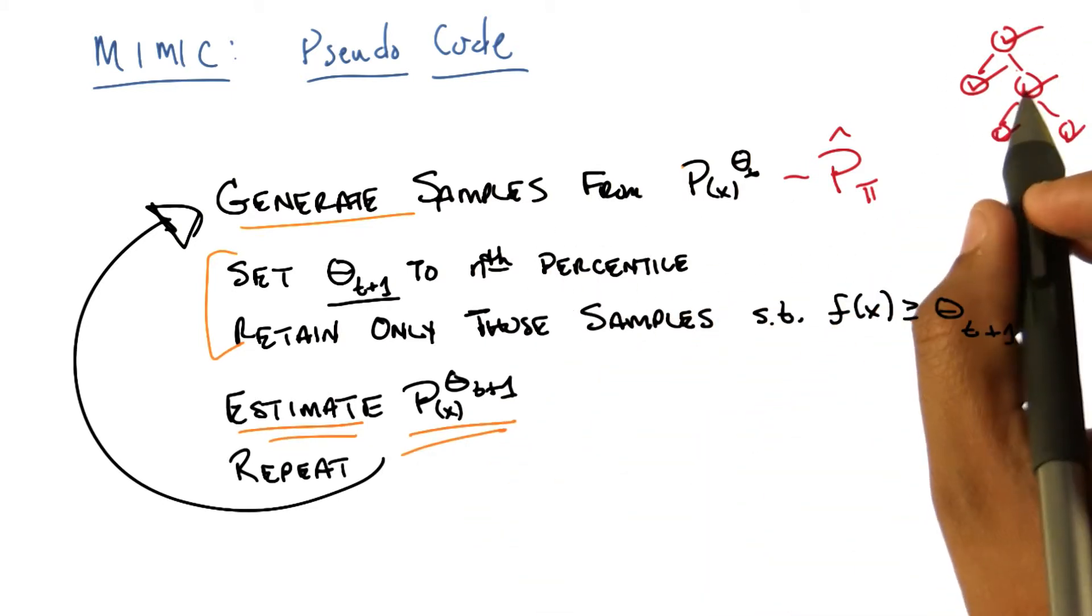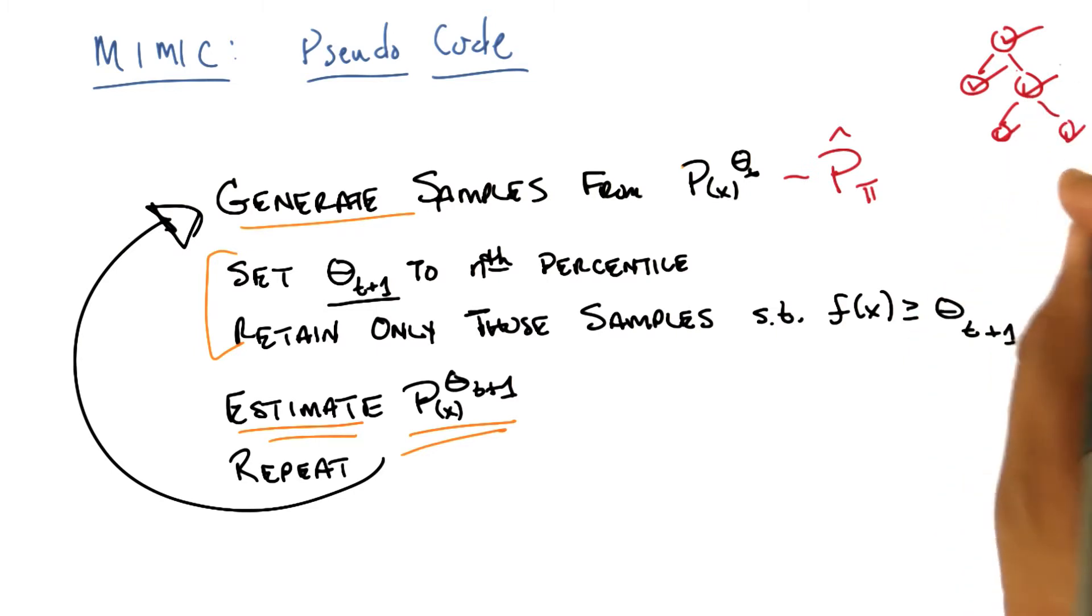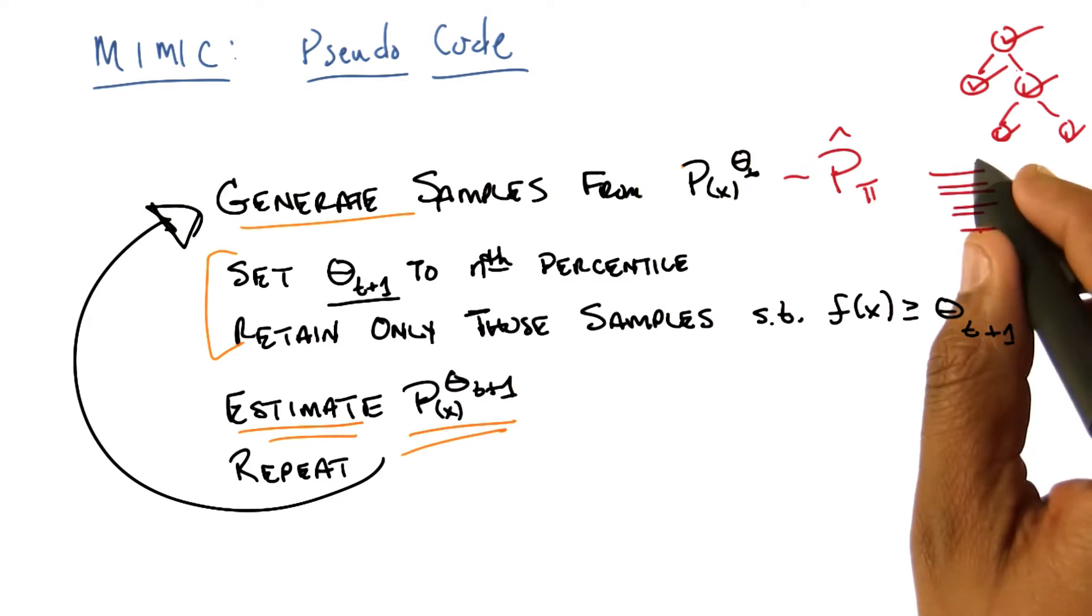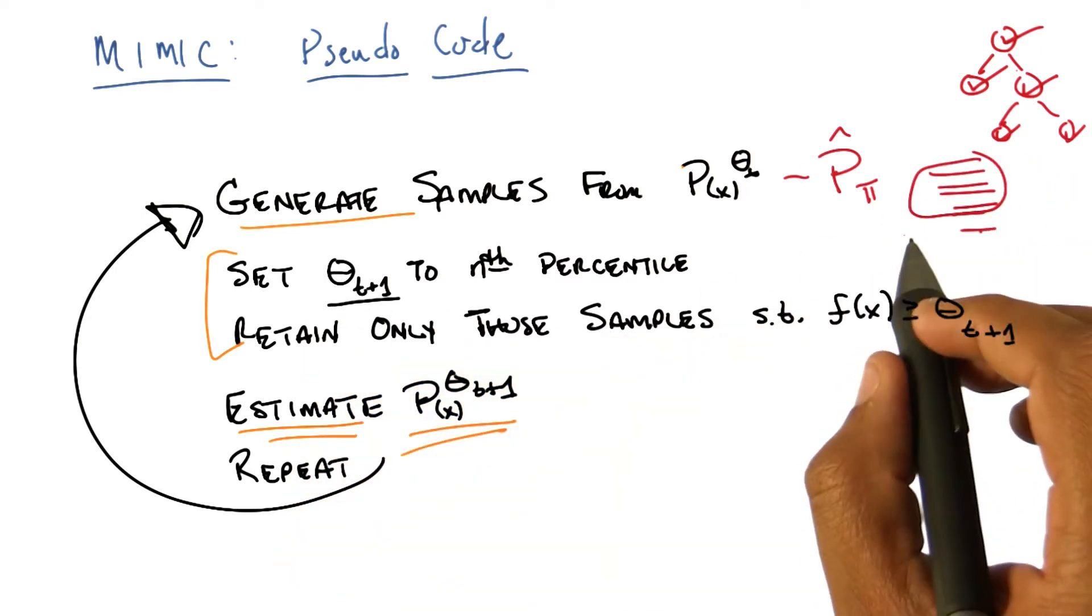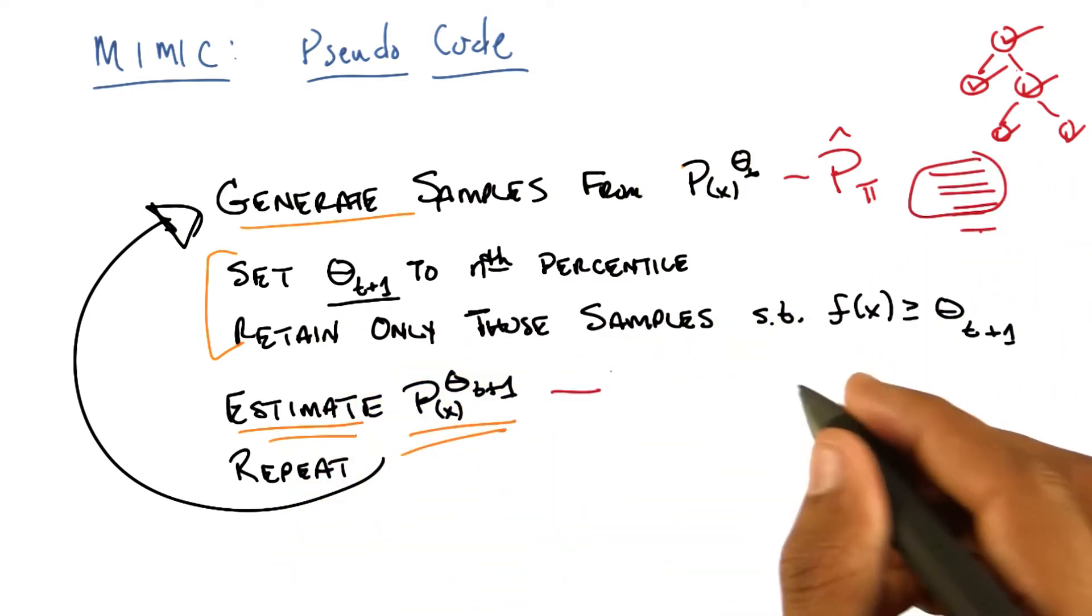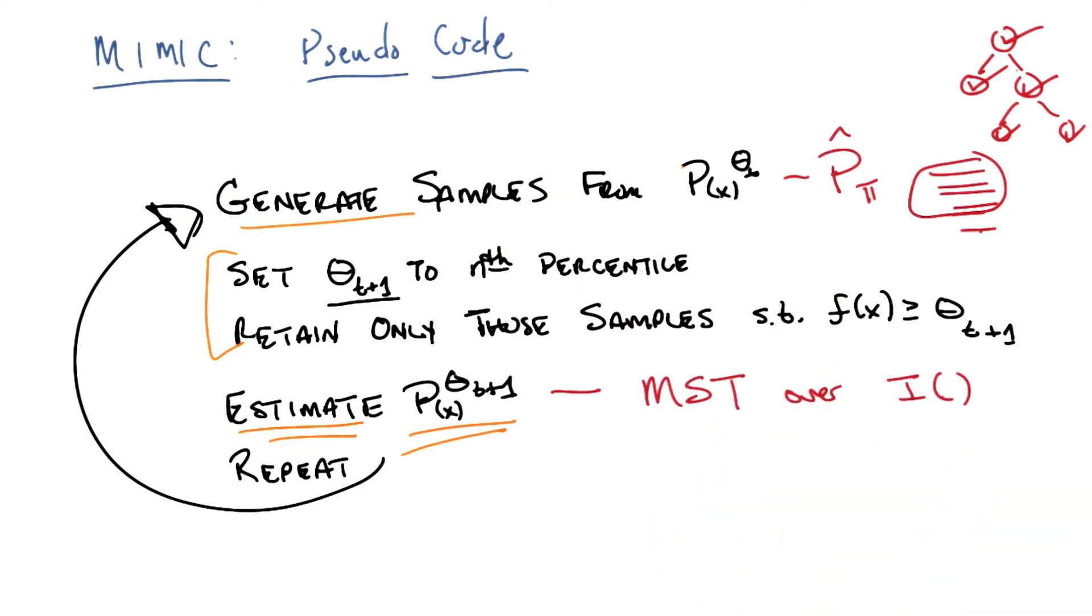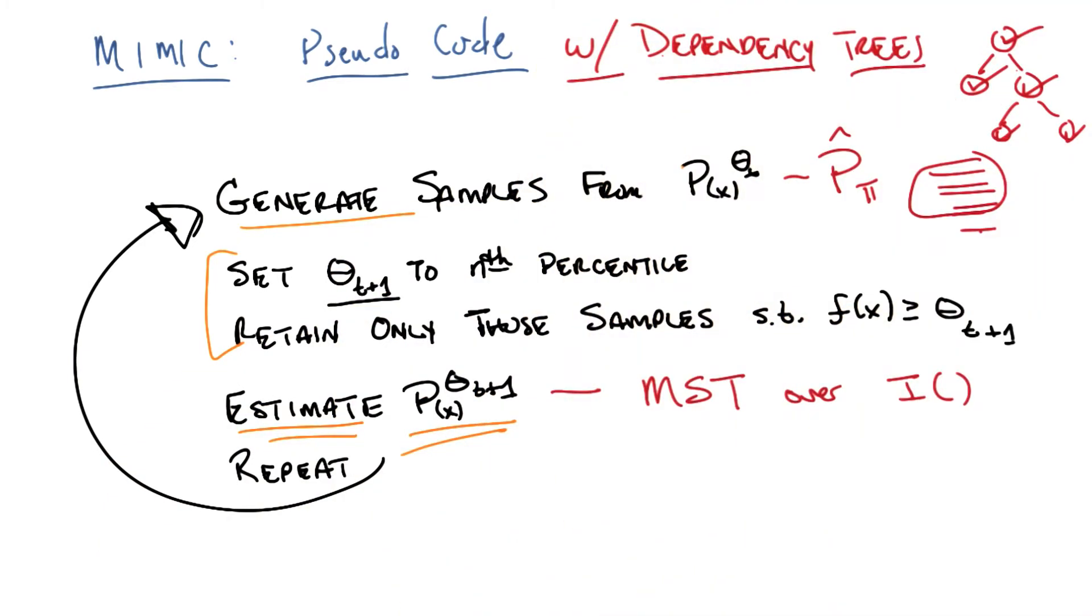So now we know how to generate samples from some tree that we have. We generate a bunch of these samples. We find the best ones, retaining only those samples. And now we know how to estimate the next one by simply doing the maximum spanning tree over all the mutual information. And then we just repeat, and we keep doing that. And there you go. A particular version of Mimic with dependency trees.